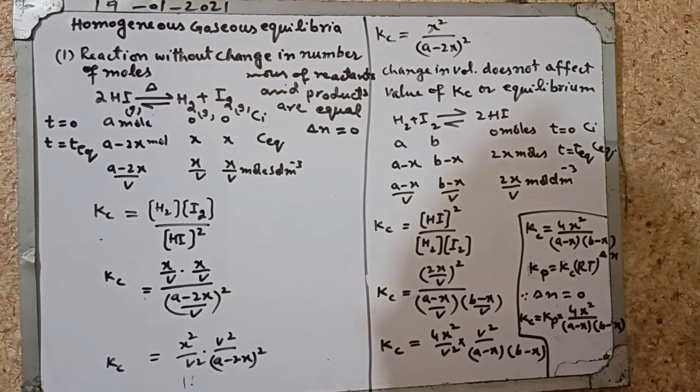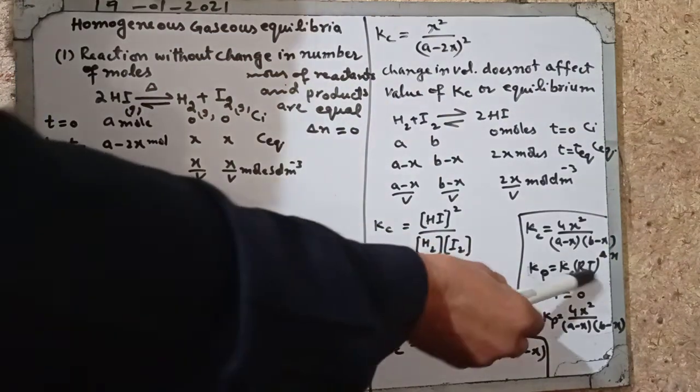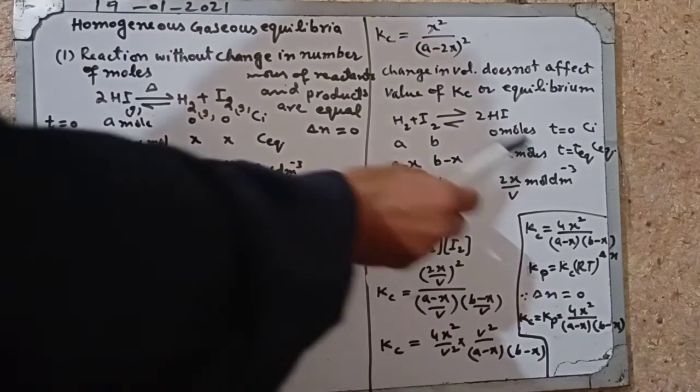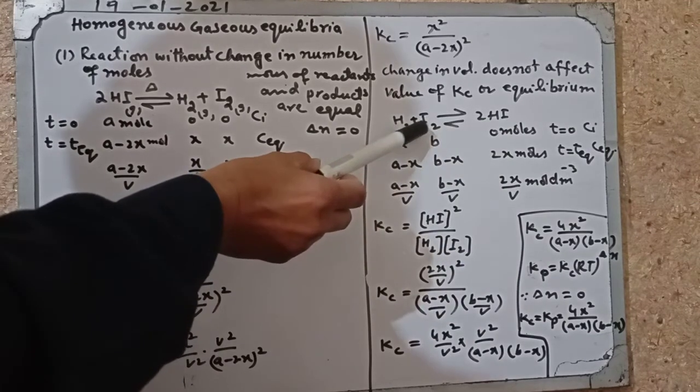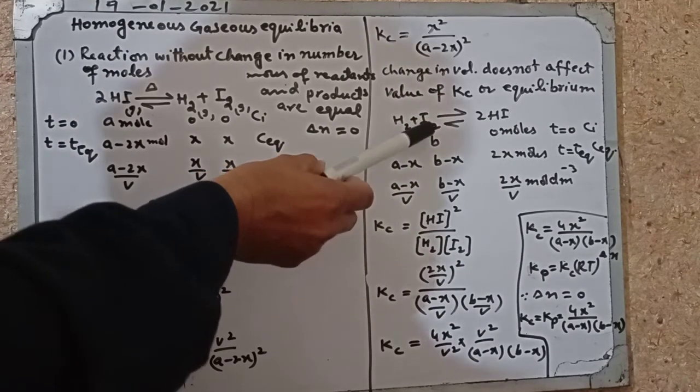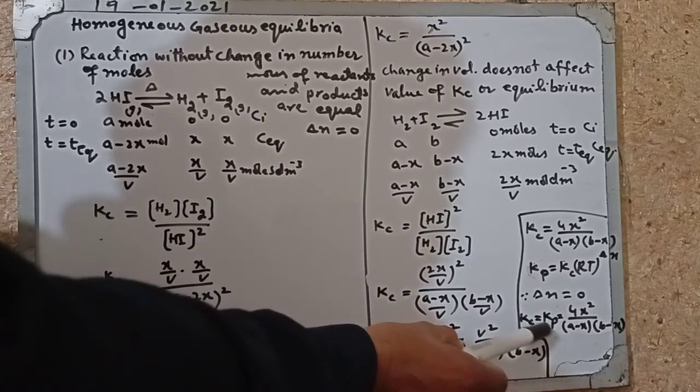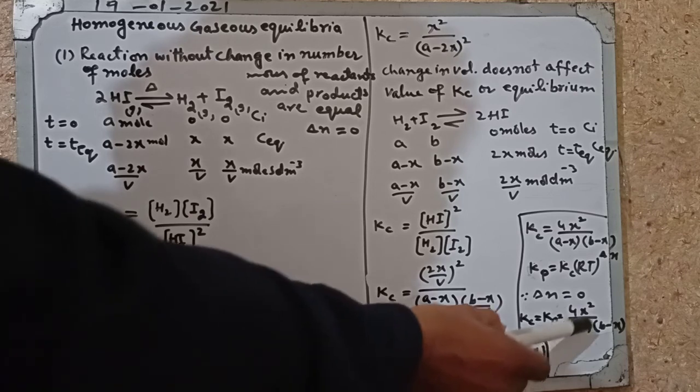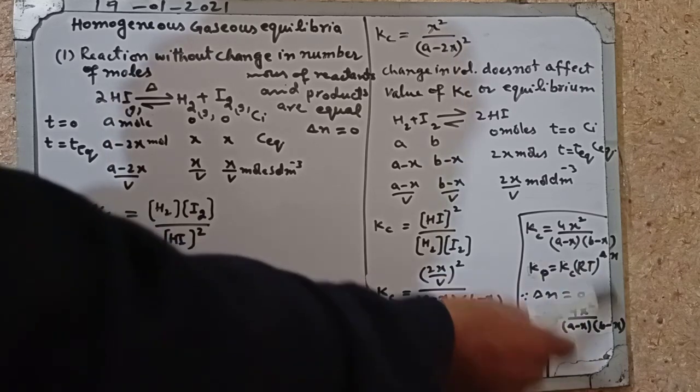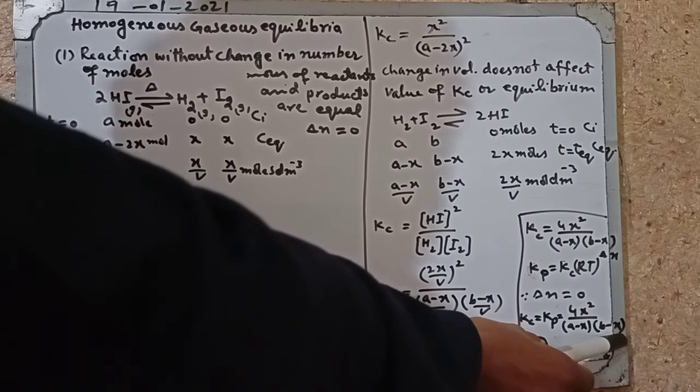Now Kp is equal to Kc into RT to the power delta n. Because in this the number of moles of reactant and product in the balanced chemical equation are equal, delta n becomes 0. Therefore Kc is equal to Kp, and this is equal to 4x square divided by a-x into b-x.